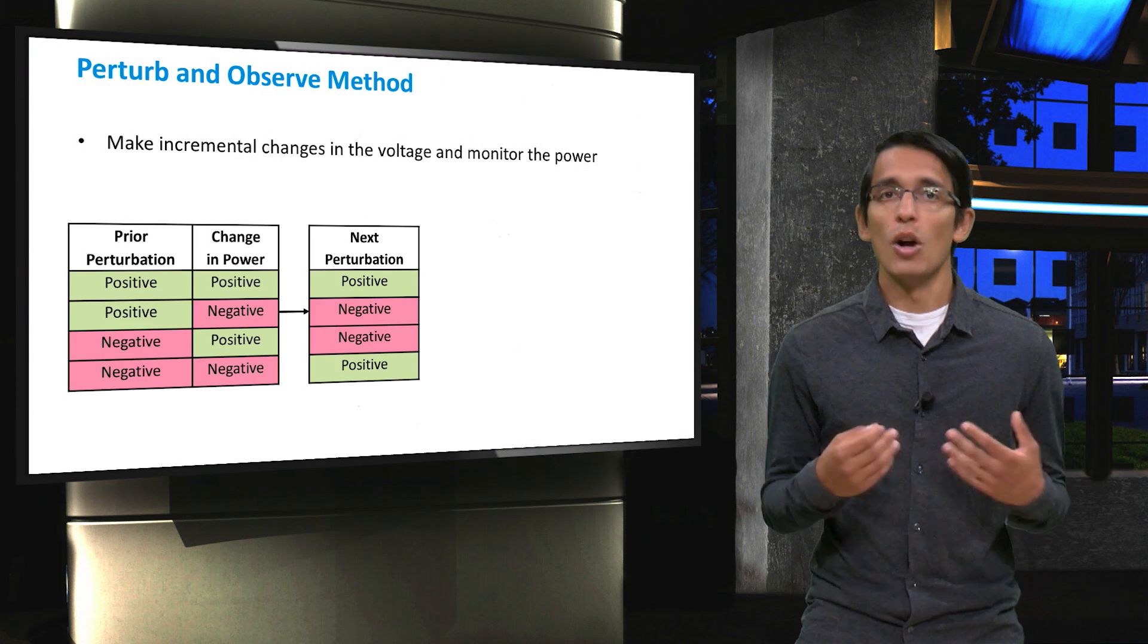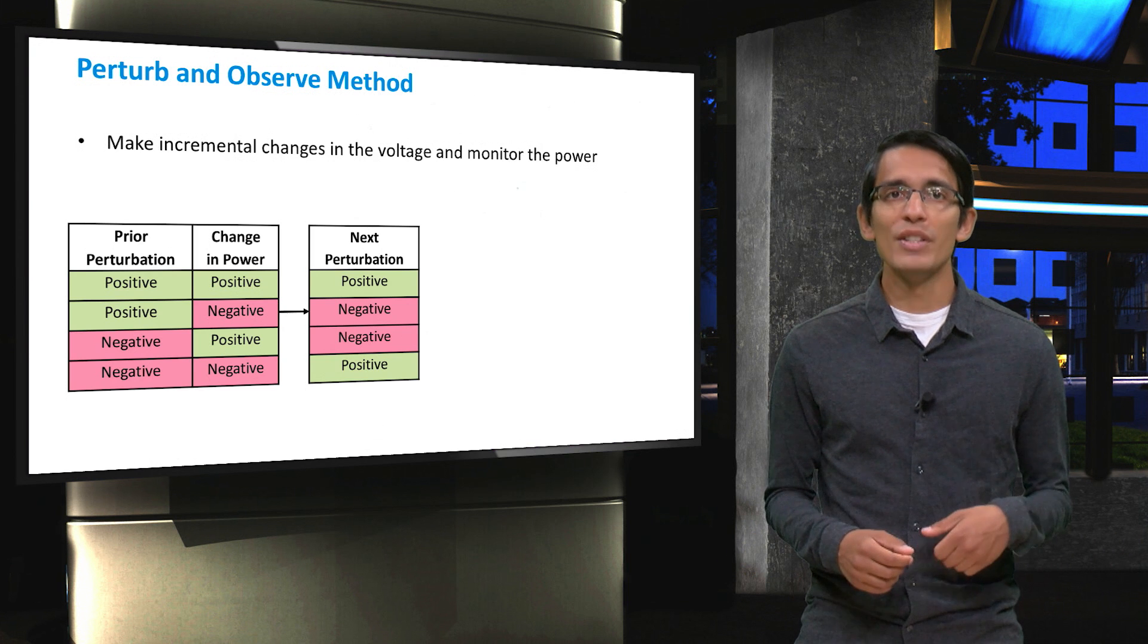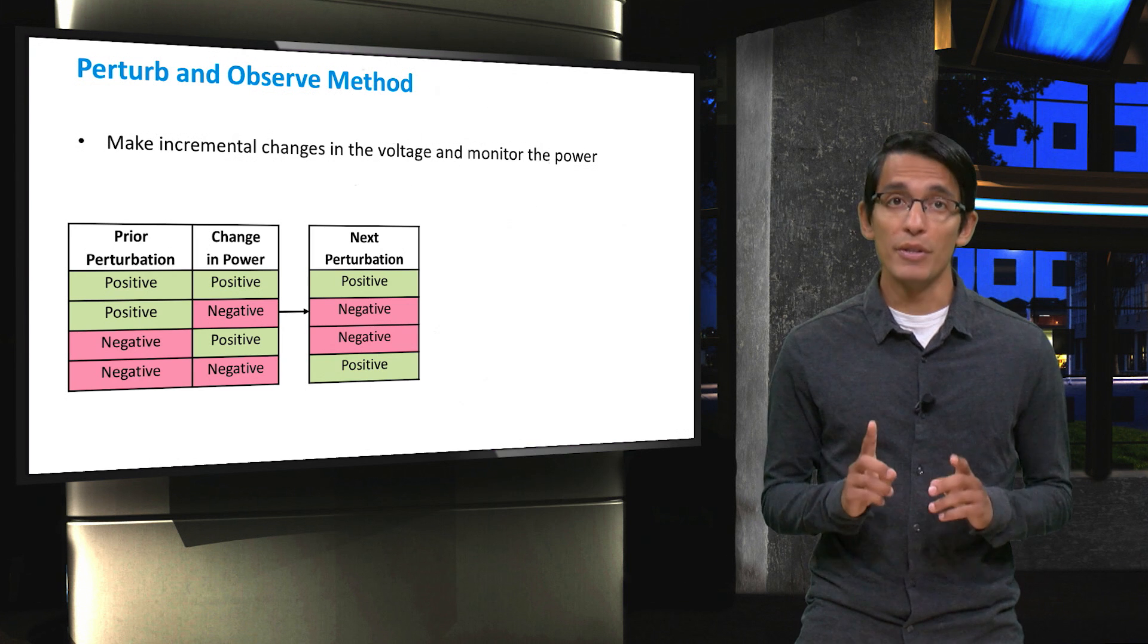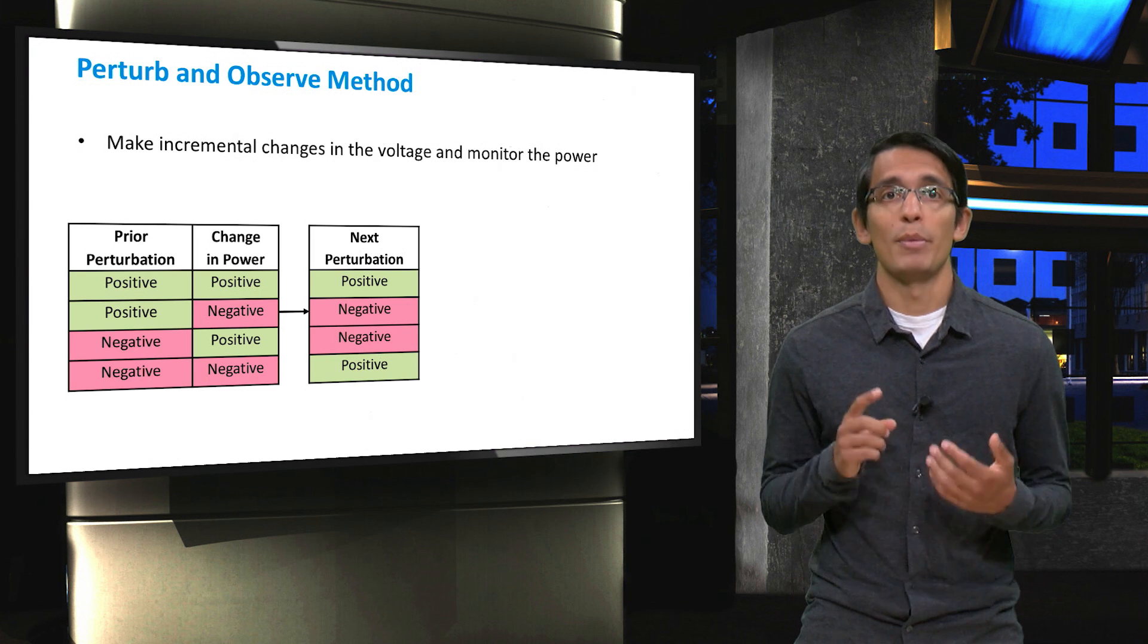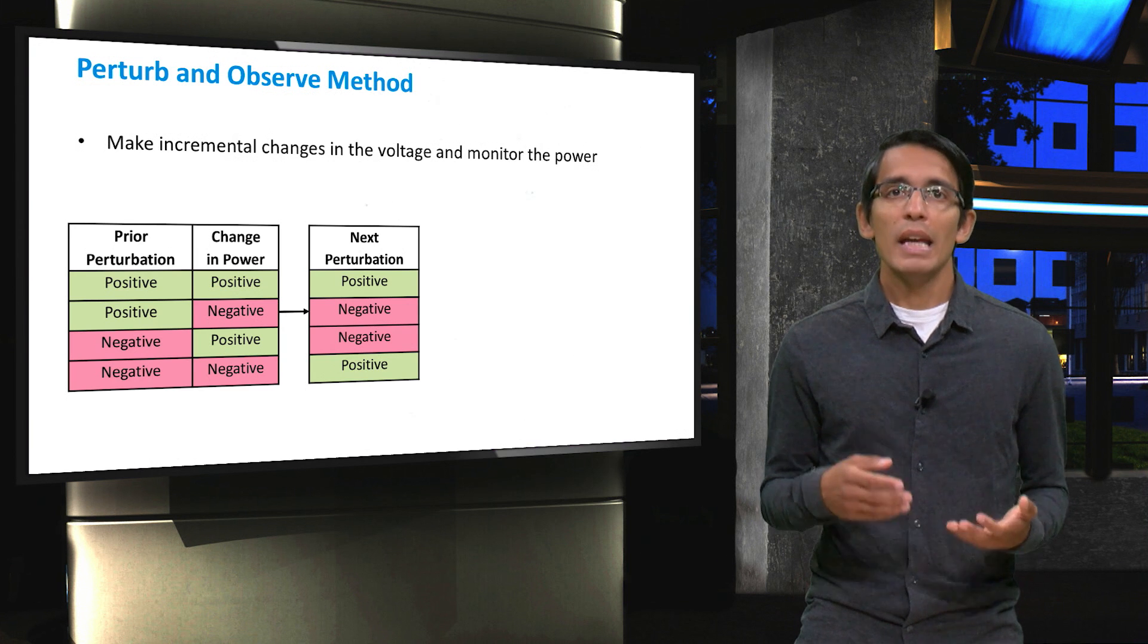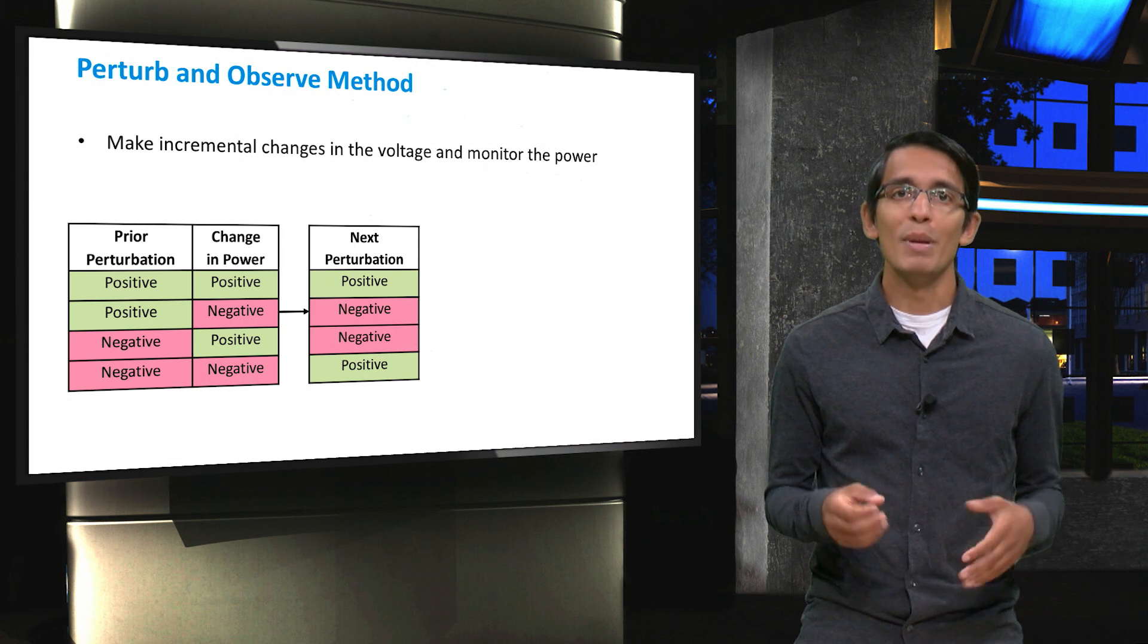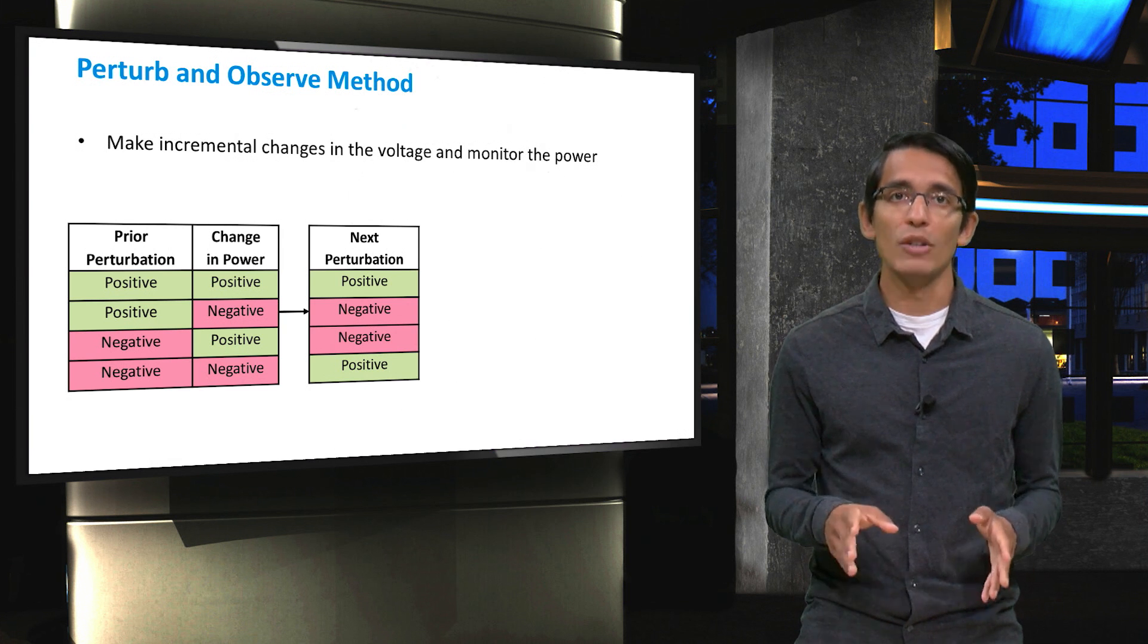This table shows all the possibilities. You can see that if the prior perturbation was positive and the change in power was positive, then the next perturbation will be positive. However, if the change in power was negative, then the next perturbation will be negative, a negative change in voltage.